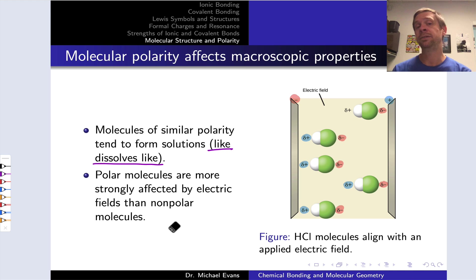Polar substances tend to be soluble in other polar substances and non-polar substances tend to be soluble in other non-polar substances. Like dissolves like. So polarity is sort of correlated with solubility.